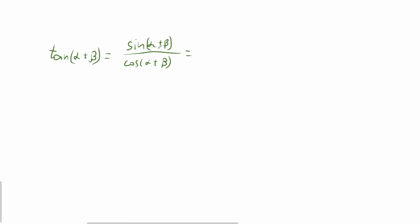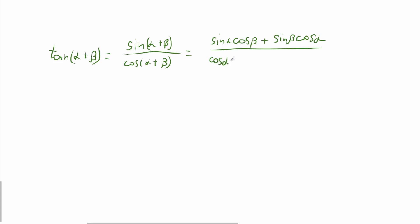Now let's expand this expression. The sine of the sum of two angles is equal to sine alpha times cosine beta plus cosine alpha times sine beta. And let's expand the cosine of alpha plus beta, which is equal to cosine alpha times cosine beta minus sine alpha times sine beta.